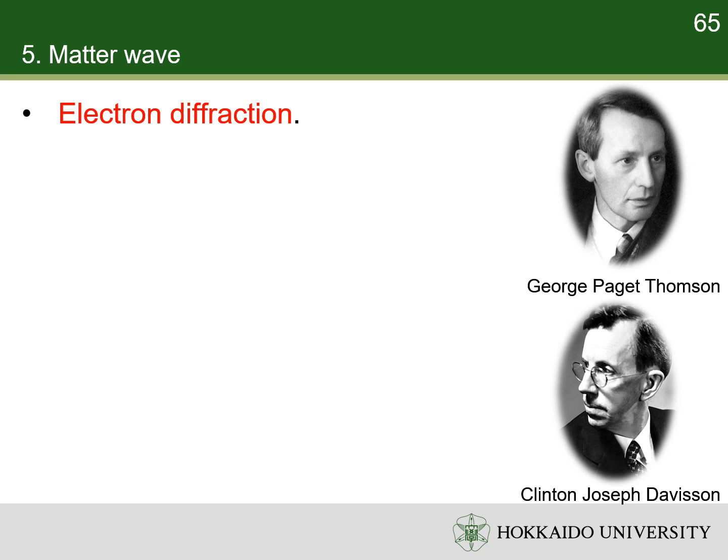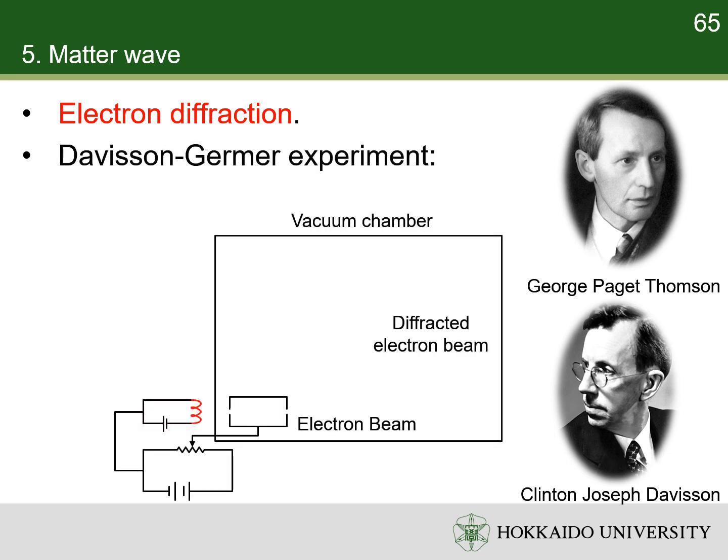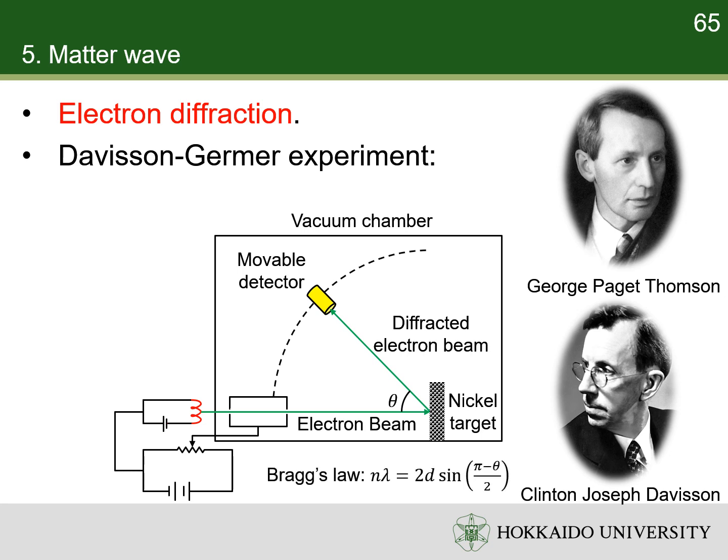De Broglie's hypothesis was confirmed three years later with the observation of electron diffraction, as it had been observed with X-rays, in two independent experiments by George Paget Thomson and Clinton Joseph Davisson. In Davisson-Germer experiment, slow-moving electrons were fired at a crystalline nickel target. The angular dependence of the reflected electron intensity was measured and was determined to have the same diffraction pattern as those predicted by Bragg for X-rays.